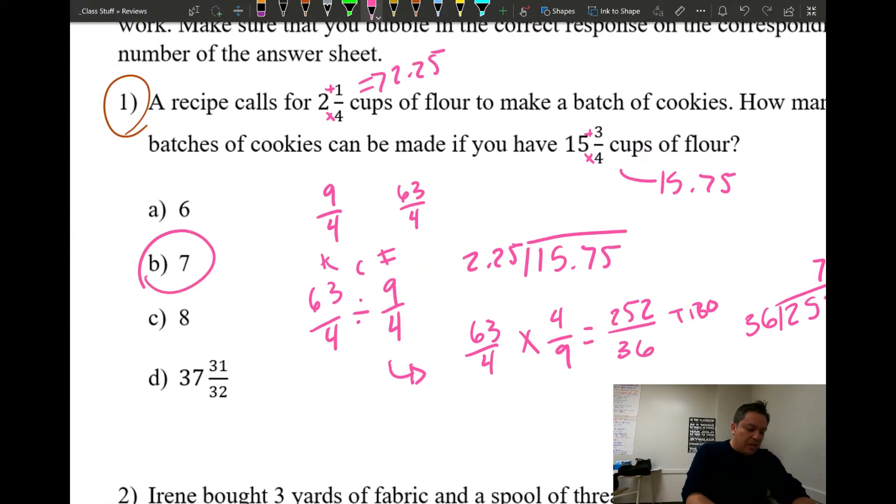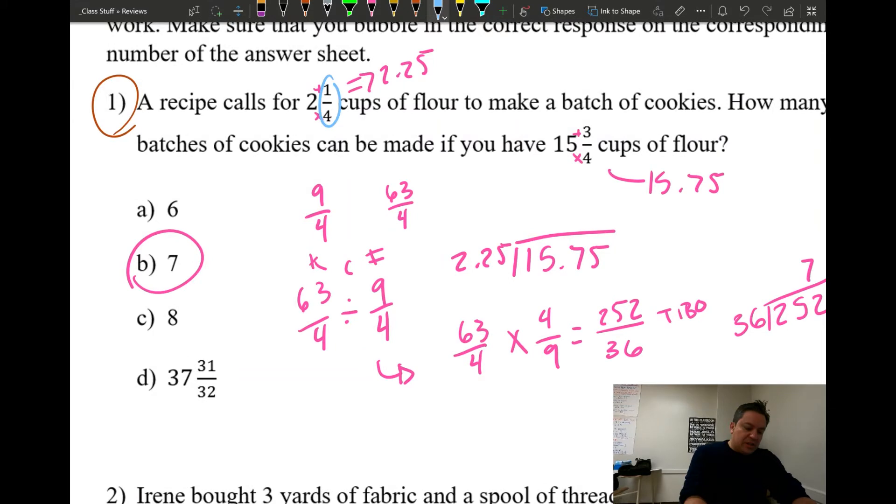We're gonna do 63 over 4 divided by 9/4, and then we have to do the keep change flip. So this will turn out to be 63/4 times 4/9. The bottom is going to be 36 and the top is going to be 63 times 4 gives you 252. And then you can just do TIBO, top in bottom out. 252 divided by 36, when you divide those you get seven, so the answer must be B.